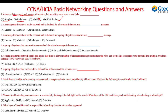Question two: a message that is sent out on the network and is destined for all systems. Let's discuss the options. A unicast is a message that is sent to only one device — one-to-one.